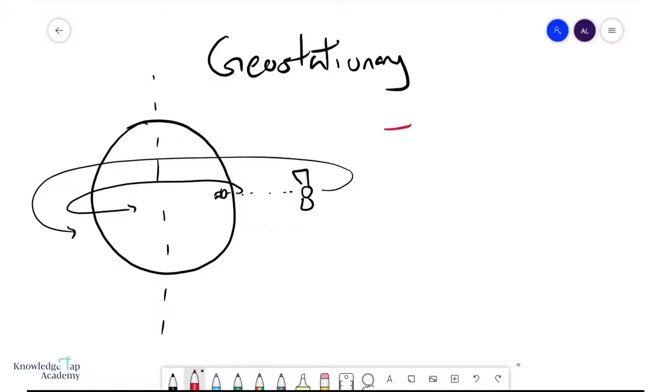So of course, since the Earth has an orbital period of 24 hours, then your satellite must also have an orbital period of 24 hours. Now the next condition is that since the Earth always rotates from west to east, then the satellite must also rotate from west to east.